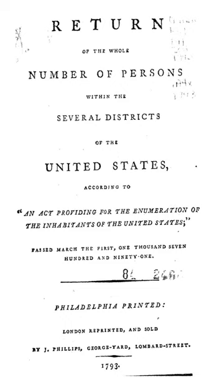The 1790 United States Census was the first Census in the history of the United States. The population of the United States was recorded as 3,929,214 as of Census Day, August 2, 1790, as mandated by Article 1, Section 2 of the United States Constitution and applicable laws.